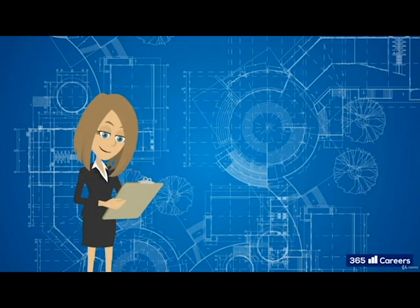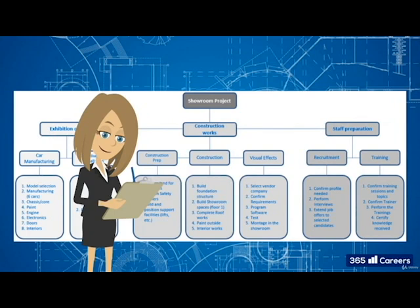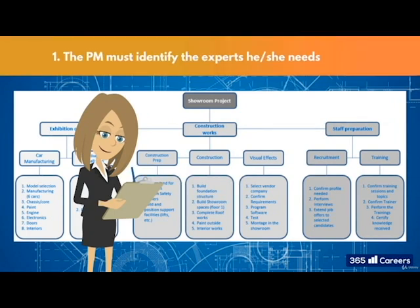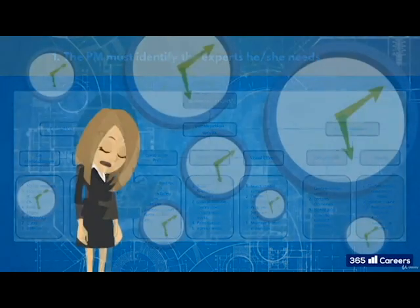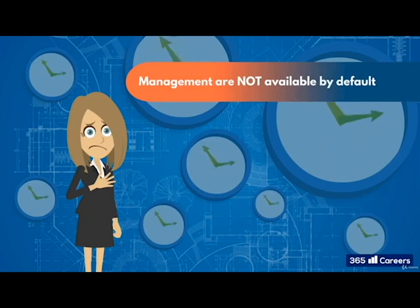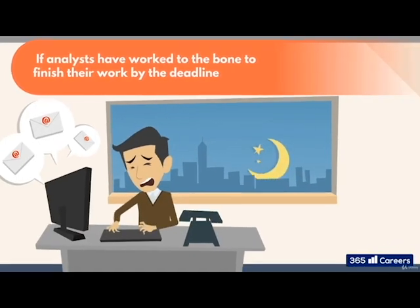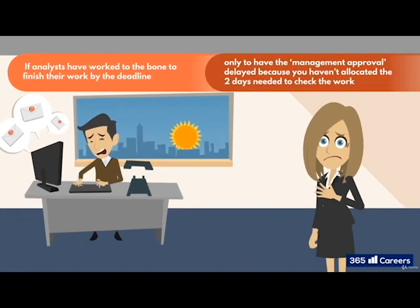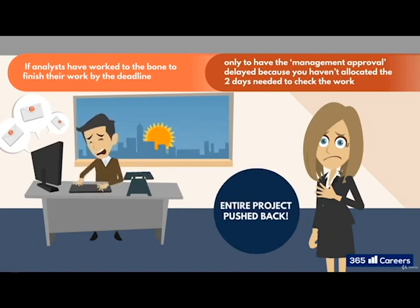As project manager, the first thing you should do is take your work breakdown structure and understand what kind of support is needed to execute the project. Whether the experts you need are external or already employed in the organisation, this is the time to identify them. One thing to note is that management effort should also be accounted for. Many make the mistake that management are available by default. But if your analysts have worked to the bone to finish their work by the deadline only to have the management approval delayed because you haven't allocated the two days needed to check the work, then not only will you have some unhappy analysts, but you have also pushed back your entire project. Managers are busy people and will not always have the time in their schedule, unless you plan for it.